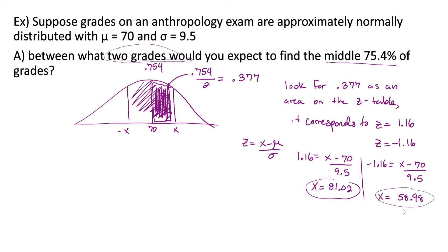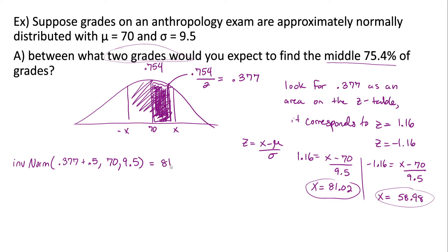If we want to solve this using the calculator, we use inverse normal because we've been given an area and want to find exam grades. We need the area to the left of the higher grade. The heavily shaded piece is 0.377, and everything below the mean is 0.5, so the area to the left of the higher grade is 0.377 + 0.5. We input mean = 70 and standard deviation = 9.5, and we get 81.02, which matches.